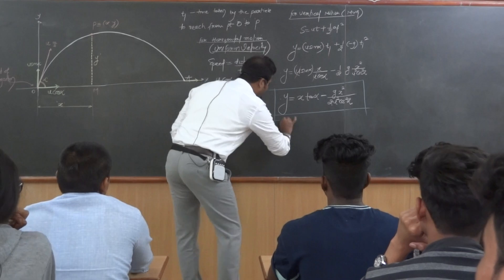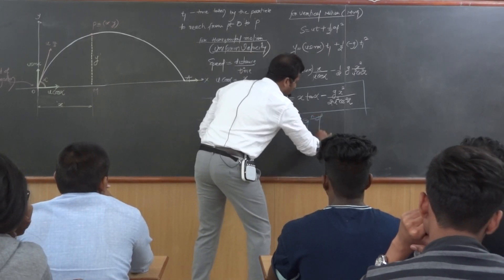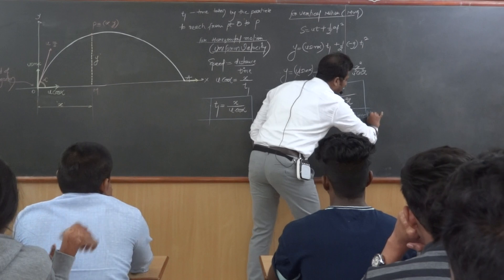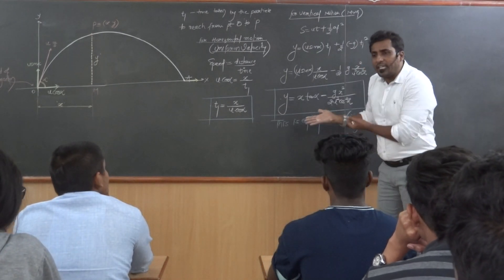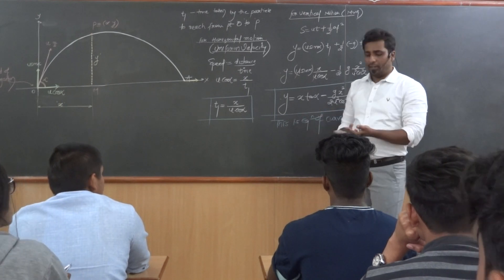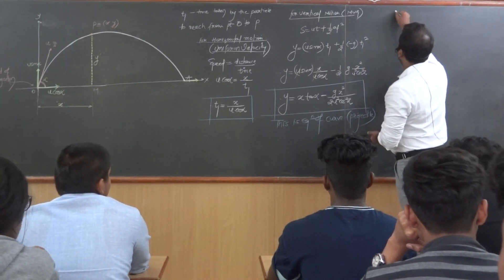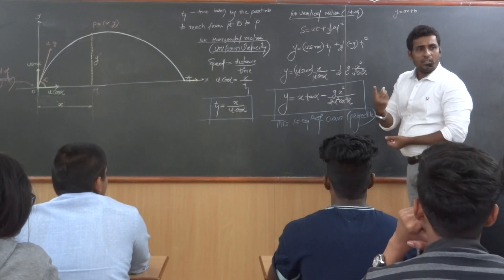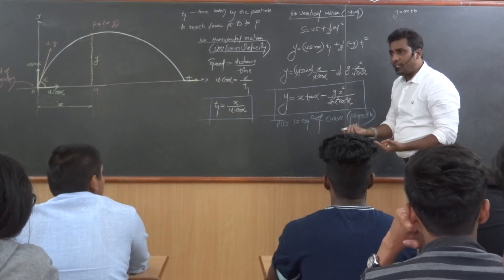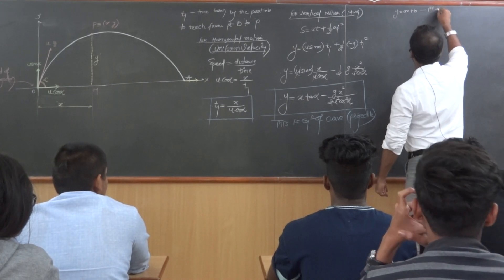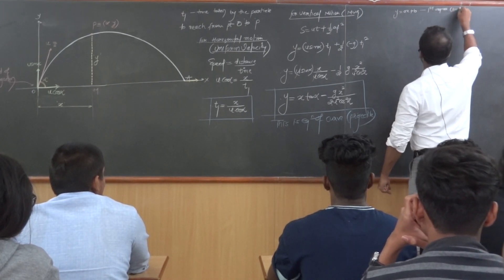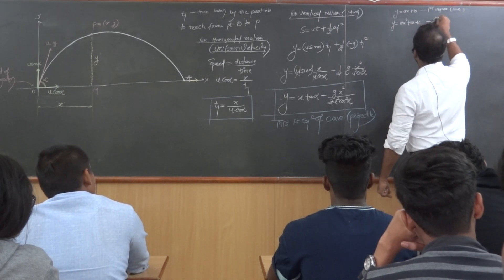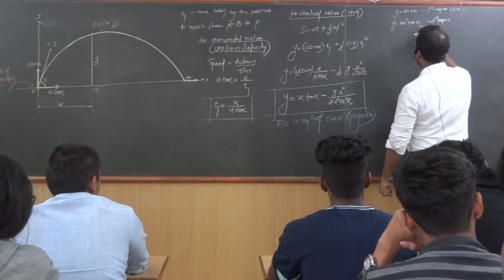This is the equation of the curve — the equation of the projectile. Now I want to understand the nature of this equation. If y = ax + b, it is a first-degree linear equation representing a line. But look at our equation: y = ax² + bx + c — this is a second-degree equation, a conic equation. It is a parabola.